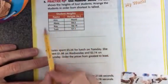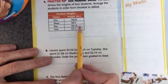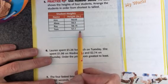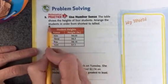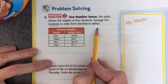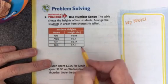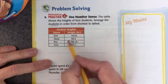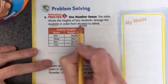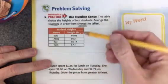This time, here we have four students, and their height is written on a table. You're going to arrange the students in order from shortest to tallest. So you need to look at the number and find which number is the smallest because you're doing shortest. So let's find the smallest.